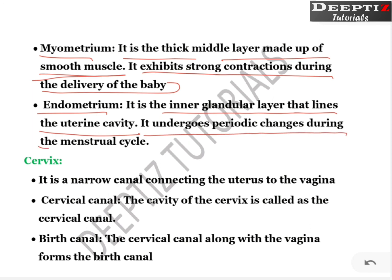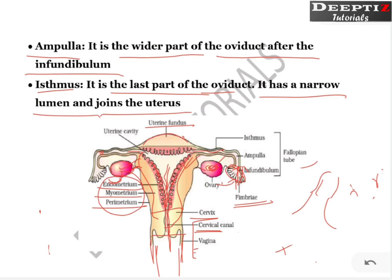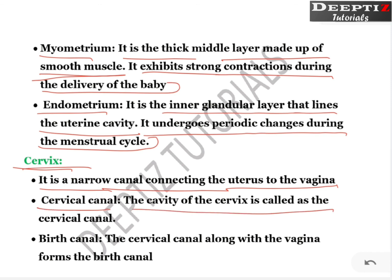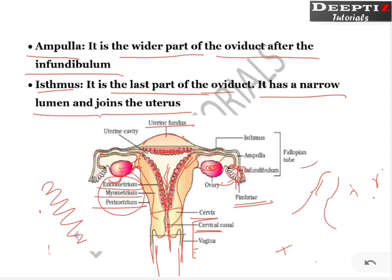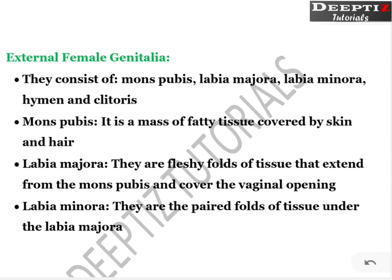Endometrium is the inner glandular layer that lines the uterine cavity. It undergoes periodic changes during the menstrual cycle — this inner layer ruptures during menstruation. Cervix is a narrow canal connecting the uterus to the vagina. The cervical canal is the cavity of the cervix. The cervical canal plus the space in the vagina together form the birth canal.